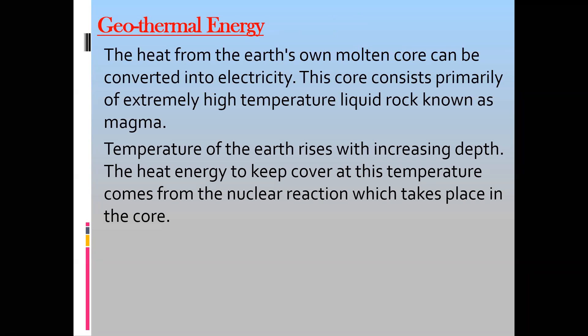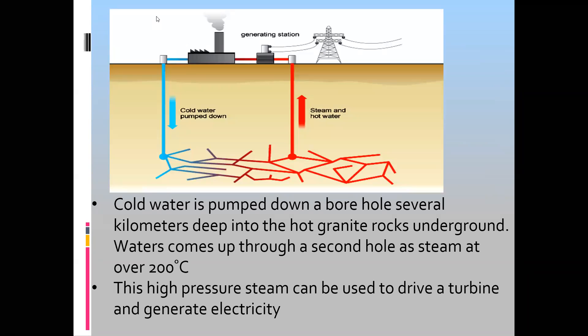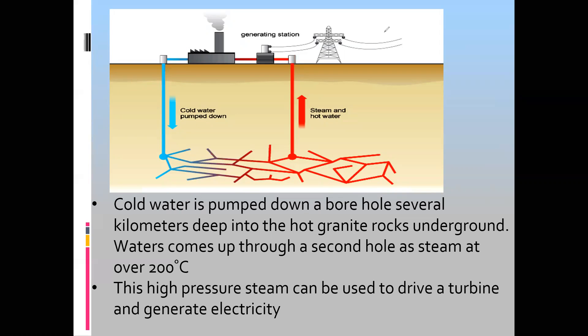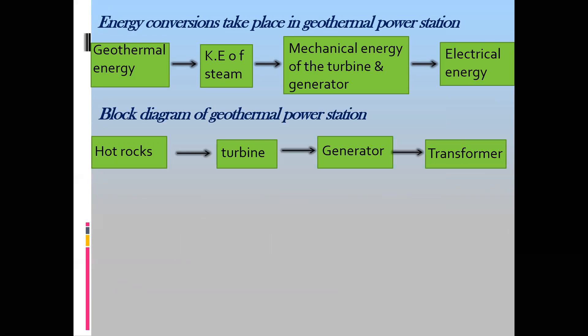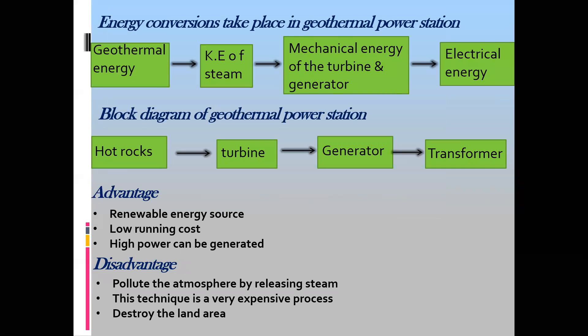The third renewable energy source is geothermal - energy from the core of the earth. Cold water is added which absorbs heat energy released by the core. The water is not flowing toward the core, but the heat energy released by the core is absorbed by the water converting it into steam. The steam rotates the turbine, and the turbine is connected to a generator which produces electricity. There are advantages and disadvantages of geothermal power stations.